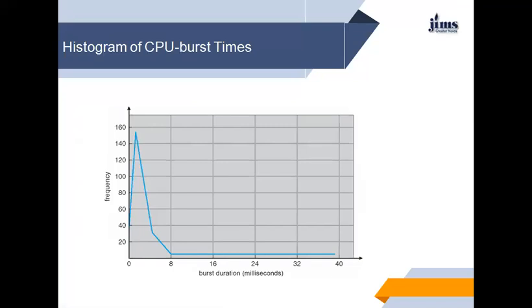We can see a diagram showing the relationship between frequency and burst duration. The X-axis shows burst duration in milliseconds and the Y-axis shows frequency — 20, 40, 60. This is a histogram of CPU burst duration, showing that long bursts have very low frequency while short bursts are most common.